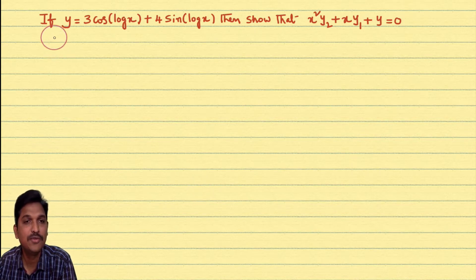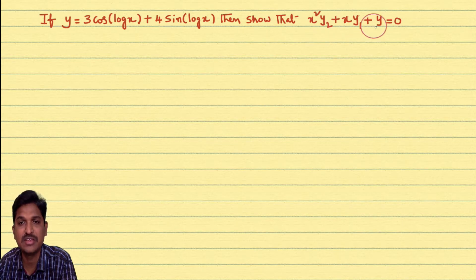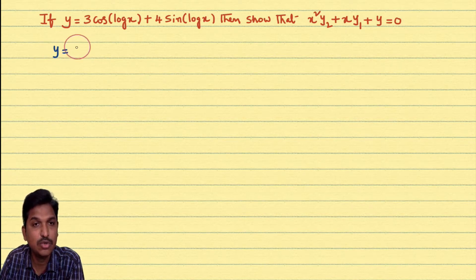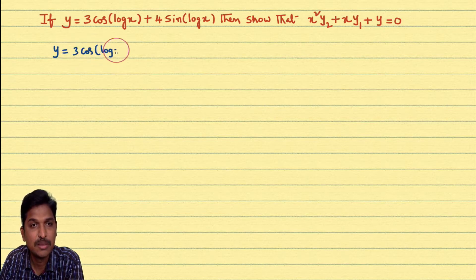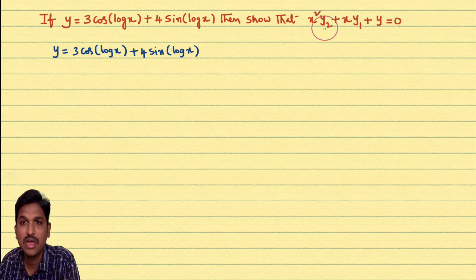See this problem: if y = 3cos(log x) + 4sin(log x), then show that x²y₂ + xy₁ + y = 0. The given curve is y = 3cos(log x) + 4sin(log x). We want to prove that x²y₂ + xy₁ + y = 0.